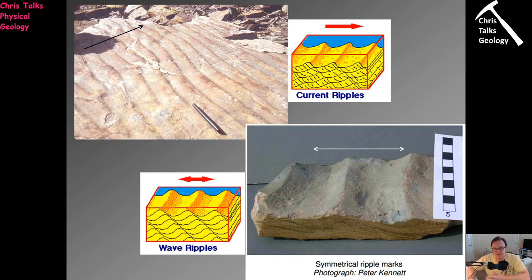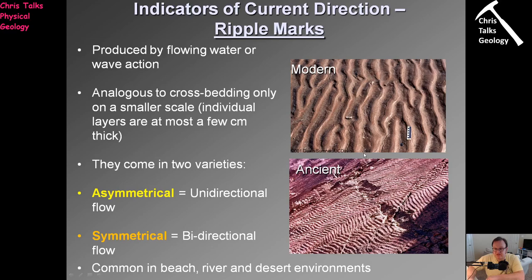The other type of ripple we have are bidirectional ripples, or wave ripples, produced by a flow of the transport medium going in two different directions. The classic example would be a beach: the wave hits the beach, pushes sediment up the beach, then turns around and comes straight back down. You have flows going in two opposite directions — they cancel each other out and you end up forming nice symmetrical ripples. The direction the water is moving is at 90 degrees to the crest line.